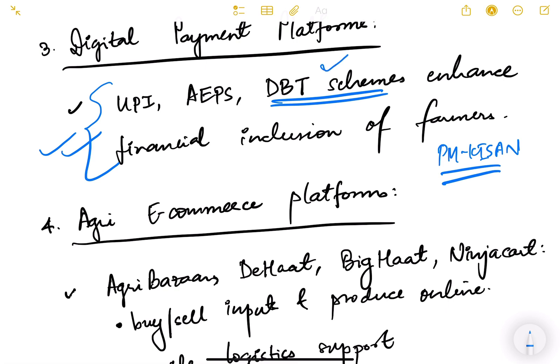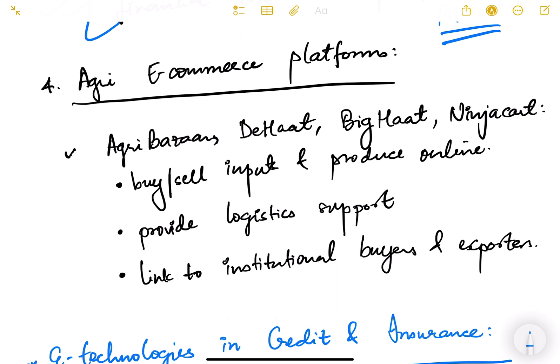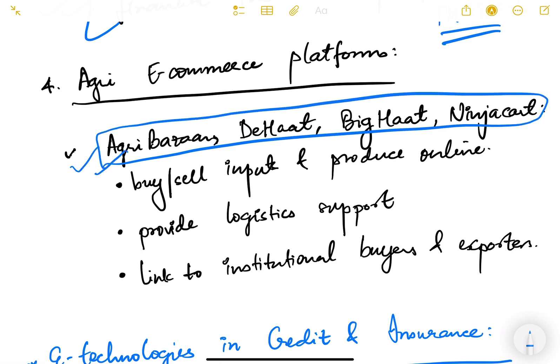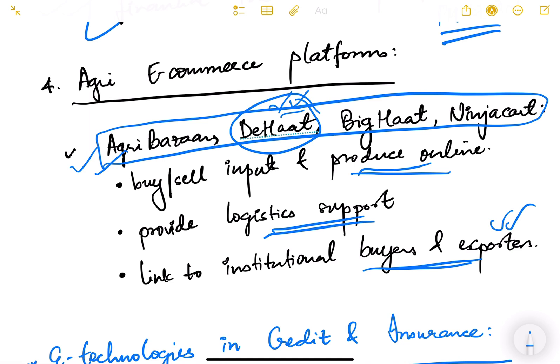Agri e-commerce platforms such as Agri Bazaar, DeHaat, BigHaat, and Ninja Cart are private initiatives enabling farmers to buy and sell inputs and produce online. They provide logistics support right from harvesting to cold chains, warehouses, and connect farmers to institutional buyers and exporters. DeHaat in particular is a very good initiative providing logistical support and helping farmers sell produce online while connecting them to institutional buyers.